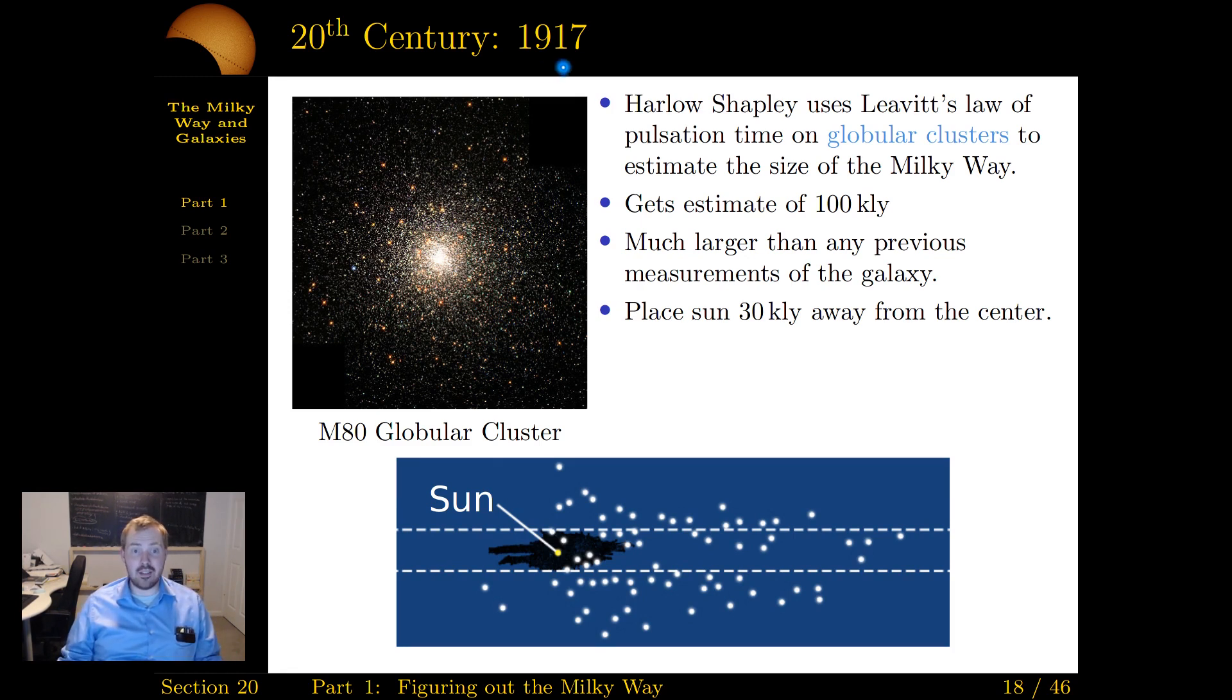Go to 1917 now, and you have a Harlow Shapley, who is using the Leavitt's law of that pulsation time. And he's looking specifically at these globular clusters, giant gatherings, a lot of stars. And he uses the clusters to estimate the size Milky Way. He's going to step beyond what the Herschels had accomplished. And he's able to get more accurate measurements. And he gets a size of about 100,000 light years. Getting close. It's about half rounding, about half of what we now know today, the accurate measure. So Shapley's got this amazing tool for taking distances, and he applies it.